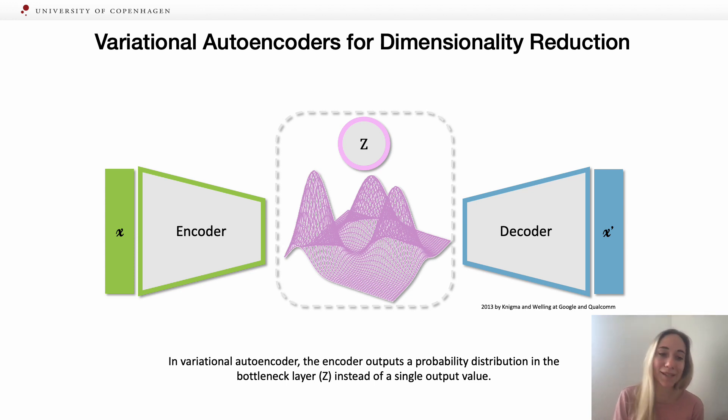In an ideal world, input X on the left is equal to X prime, which is the output on the right.